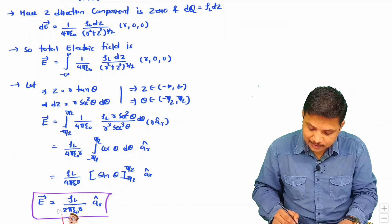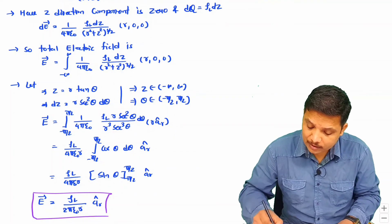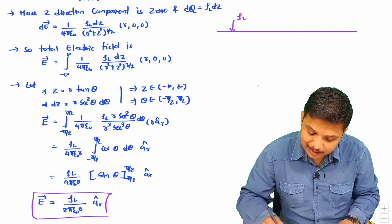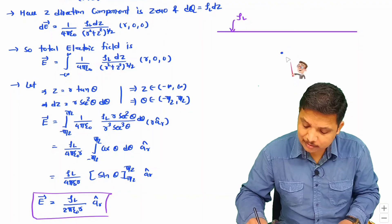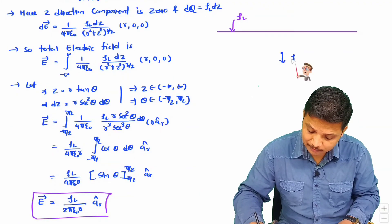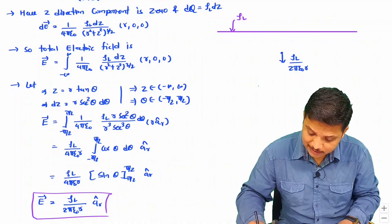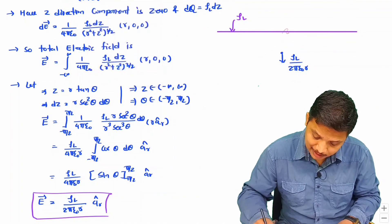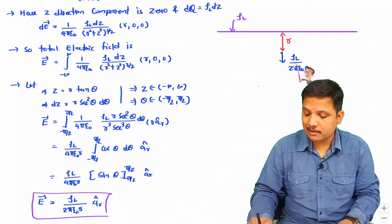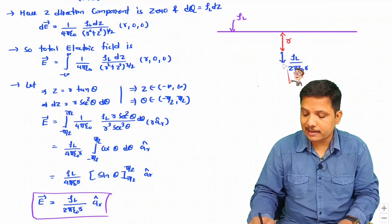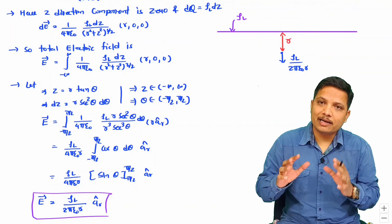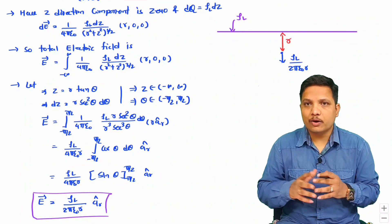For solving examples, we just need to understand this formula in a simpler way. If we have a line charge distribution and want to calculate the electric field at a certain distance, it will obviously be in the radial direction, and the electric field equals rho_l divided by 2 pi epsilon 0 r, where r is the perpendicular distance. By calculating r, we simply place it in the formula to get the electric field. Future videos will cover more examples on this topic. I hope you have understood this derivation.